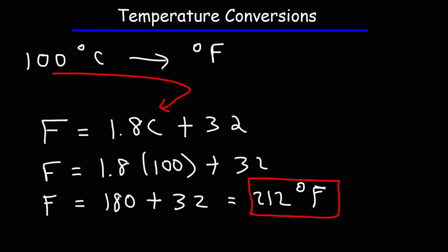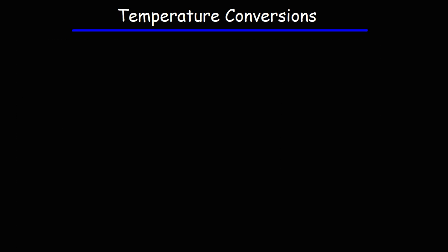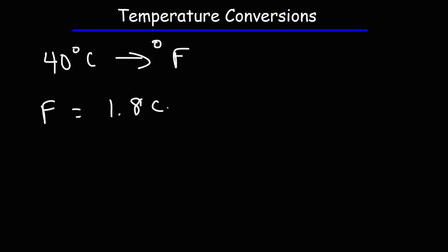So let's try another example of converting a temperature in Celsius to Fahrenheit. Let's say we want to convert 40 degrees Celsius to Fahrenheit — go ahead and try it. We're going to use the same formula: F is equal to 1.8C plus 32, and we're going to replace C with 40.